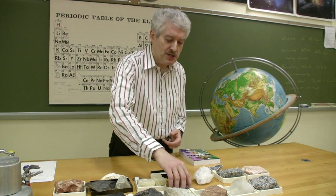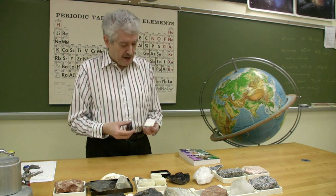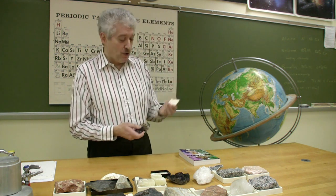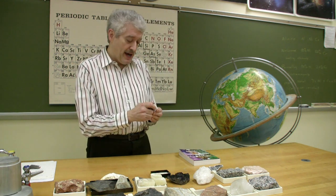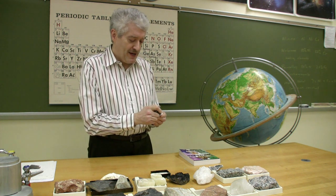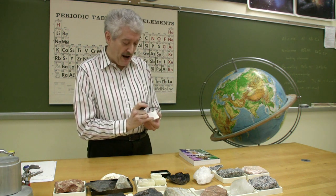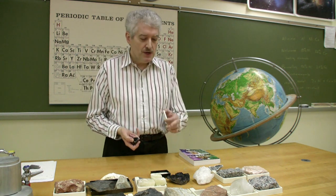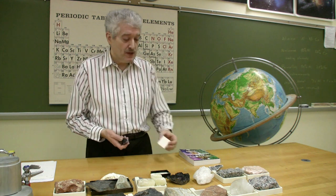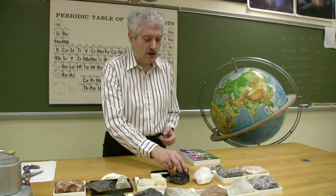The second test is called streak color. In streak, you take a piece of unglazed porcelain and you rub the mineral against that, and you get a little powder. The interesting thing with fluorite is that once you've gotten that powder, no matter what color the specimen is, your powder is going to be white, which reduces some of the variation that can occur.